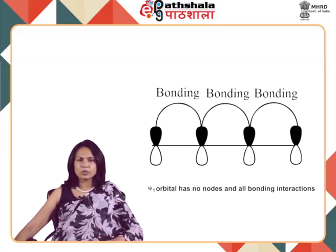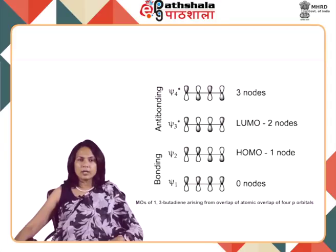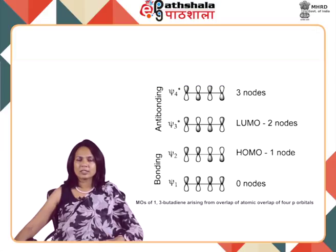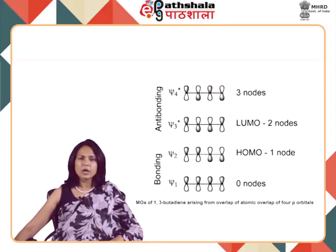The MOs of 1,3-butadiene are arranged in increasing order of energy. The number of nodes increases with energy: psi1 has the minimum energy with no nodes, and all bonding interactions. This is because electrons in bonding orbitals are more delocalized, decreasing kinetic energy. When an orbital contains a node its kinetic energy is greater than in the AOs. Psi4-star, the highest MO, has three nodes and three anti-bonding interactions, giving it maximum energy.